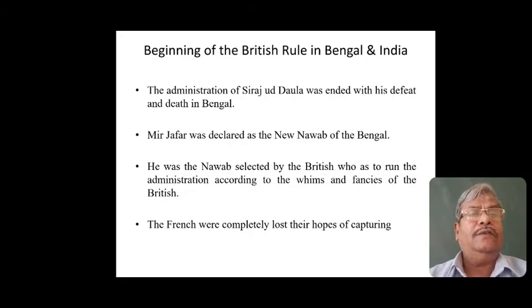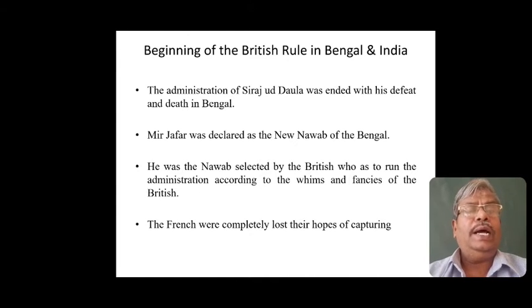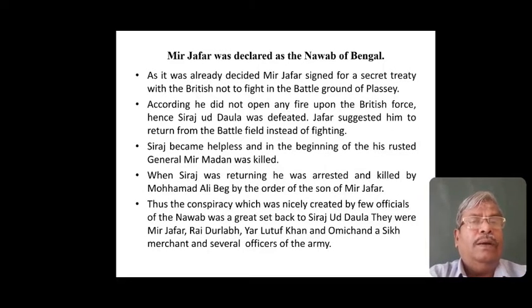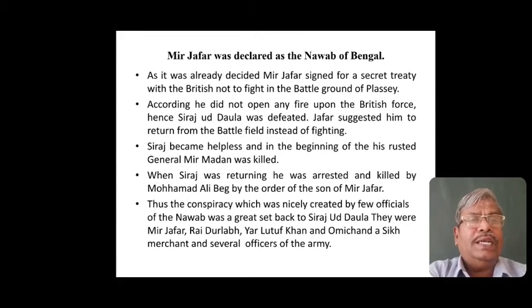This is how Siraj ud-Daulah was defeated. The British victory at Plassey brought an end to Siraj ud-Daulah's rule and started the rule of Mirjafar, who was declared as the Nawab of Bengal. However, Mirjafar found it difficult to run the administration according to the whims and fancies of the British, and he lost all hopes of becoming a good administrator of Bengal. As had been decided, Mirjafar had signed a secret treaty with the British not to fight at Plassey, and accordingly he did not open fire during the encounter.